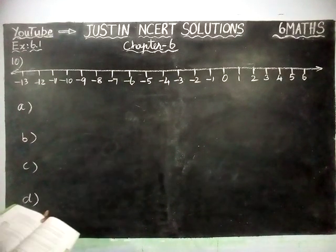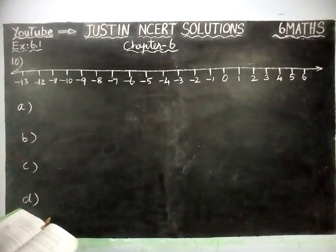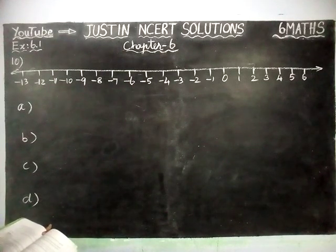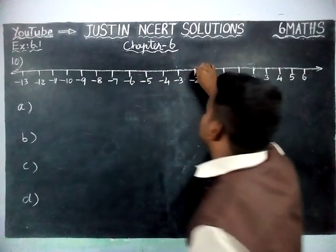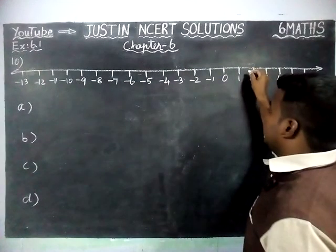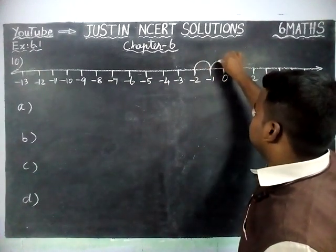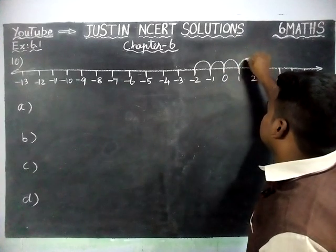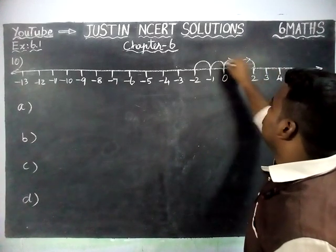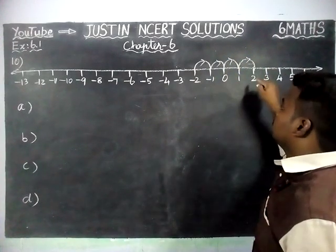The first question is: which number will we reach if we move 4 numbers to the right of minus 2? From minus 2, right-hand side, 4 numbers: 1, 2, 3, 4. So if we move 4 numbers, we will reach number 2.